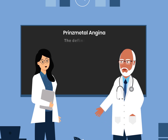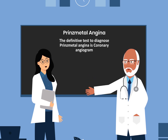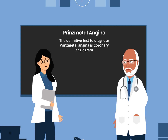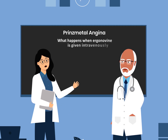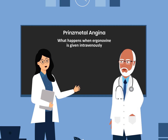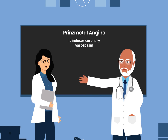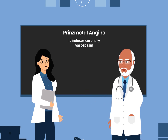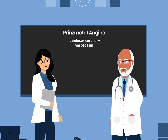The definitive test to diagnose Prinzmetal angina is coronary angiogram. When ergonovine is given intravenously, it induces coronary vasospasm.